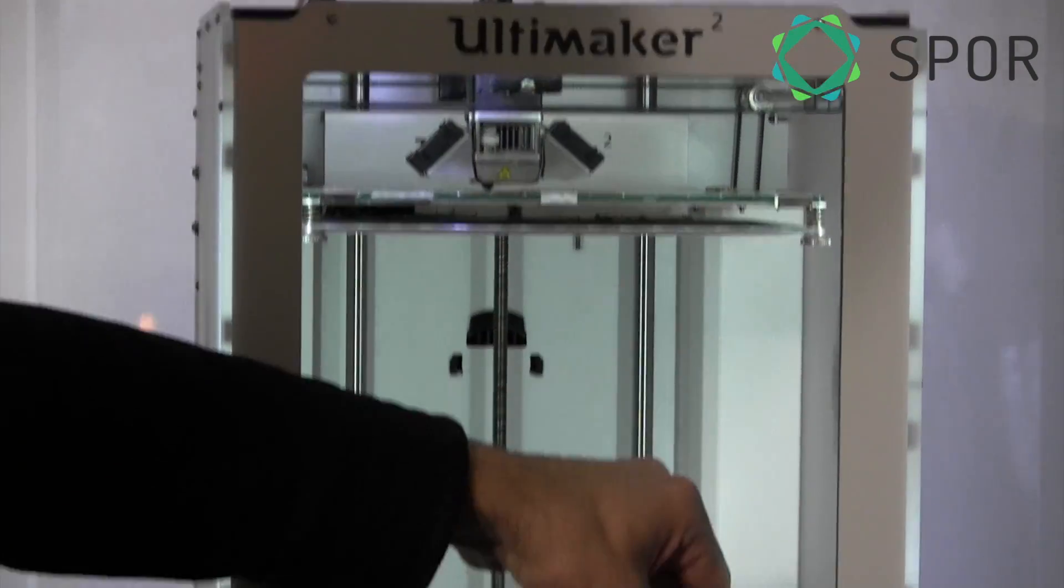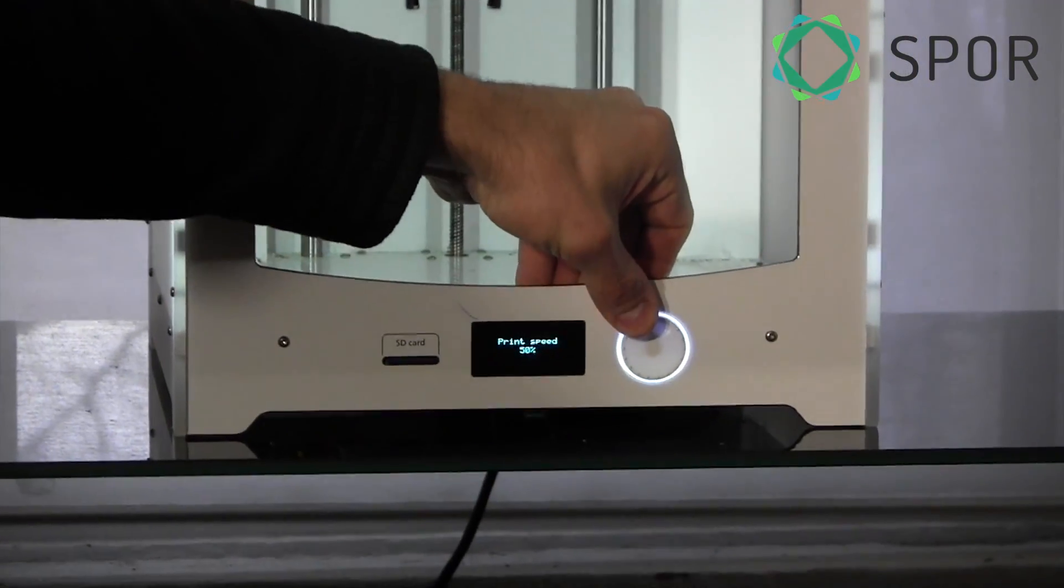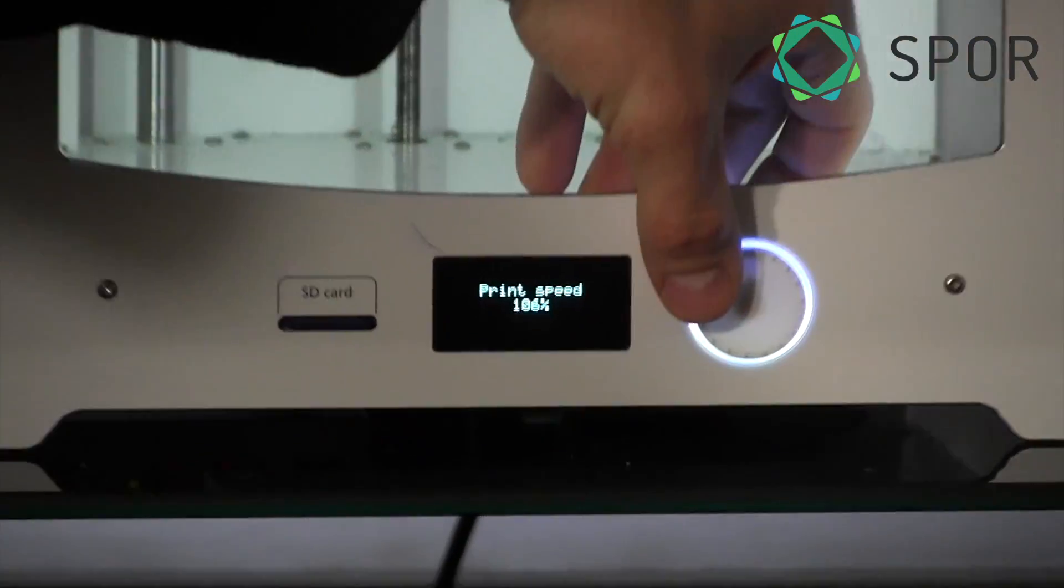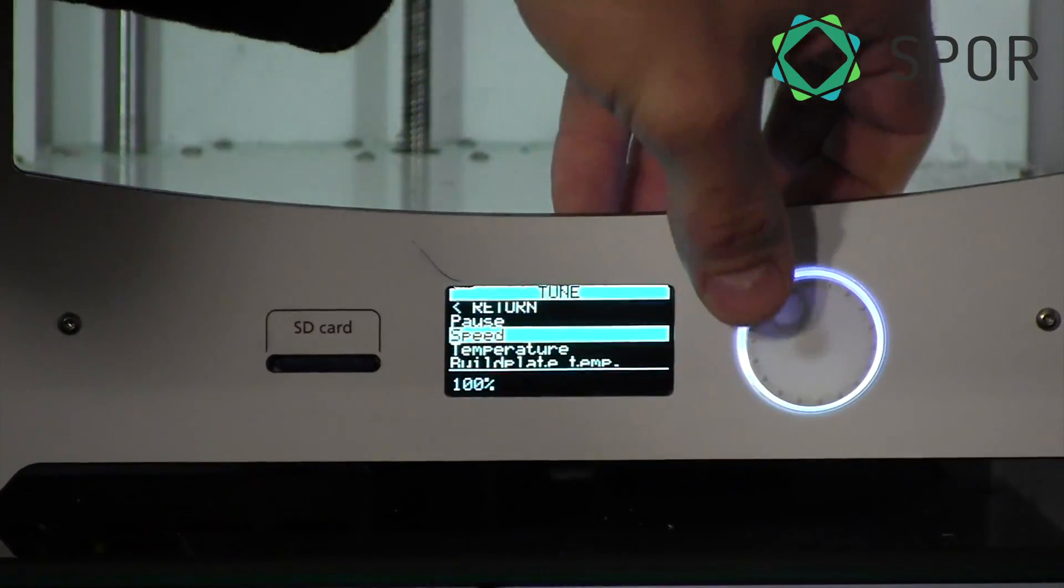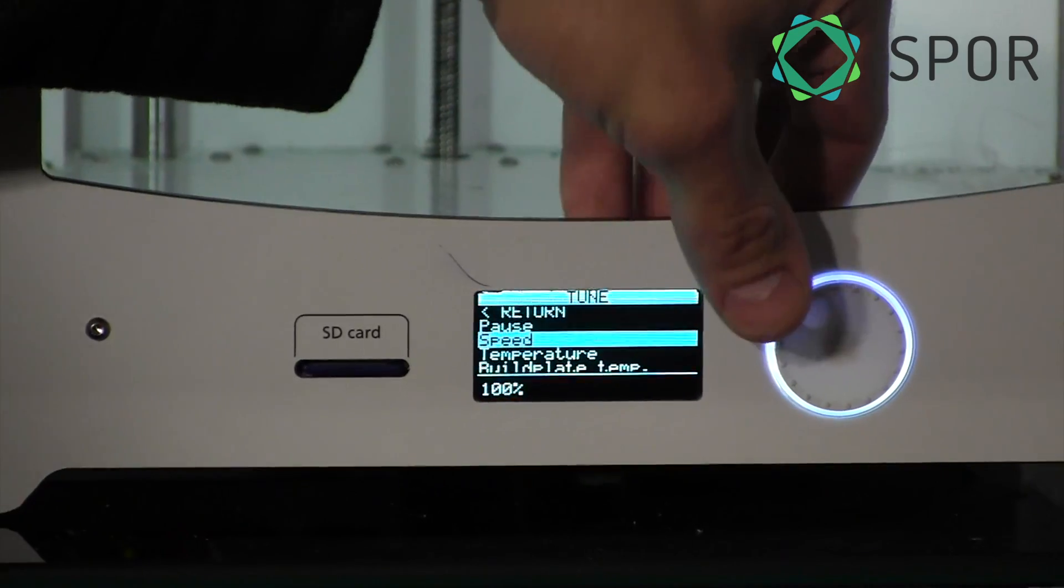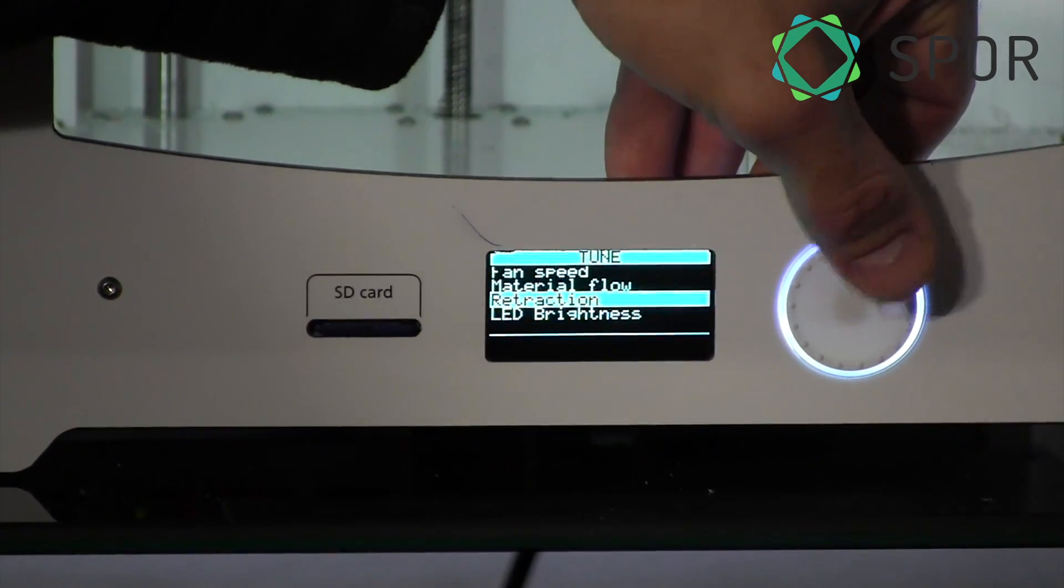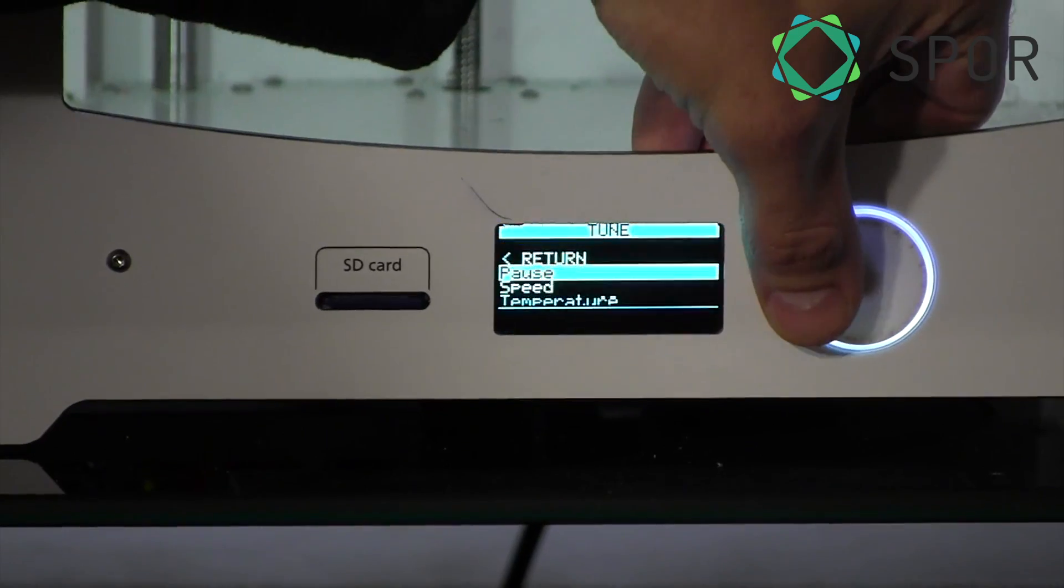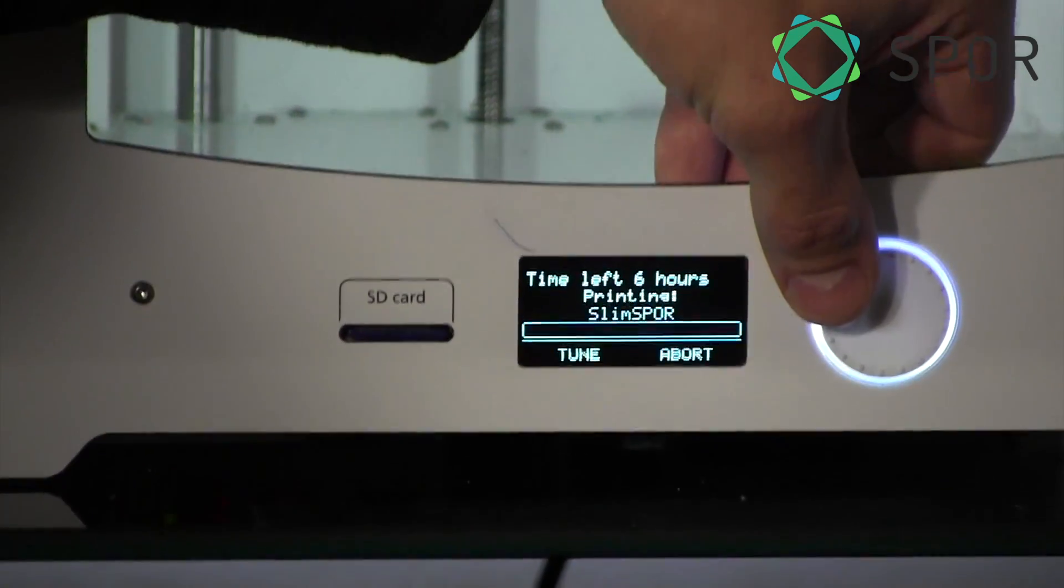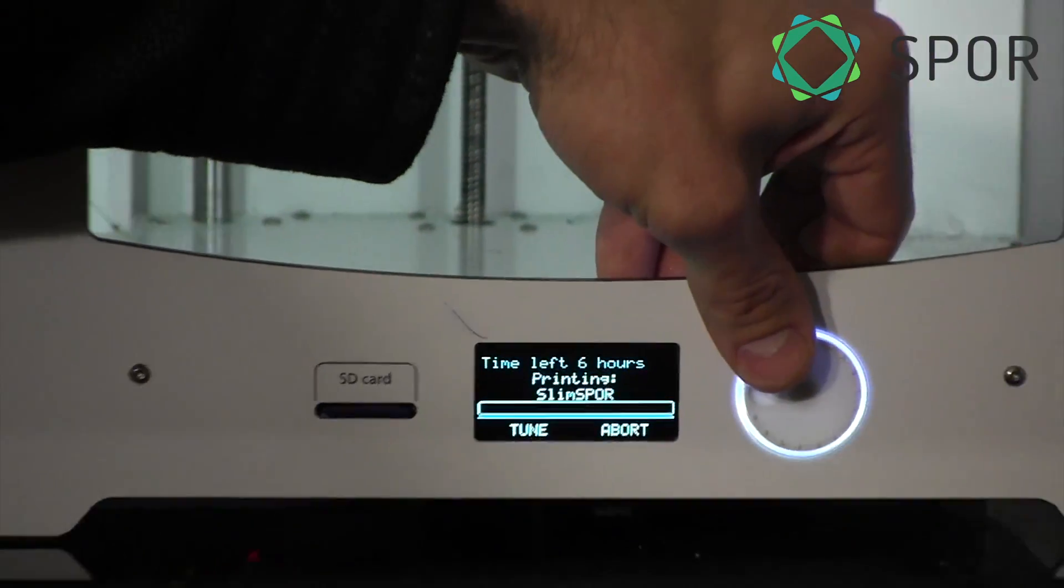Right here for the Ultimaker, you can change settings mid-print. So if I wanted to speed it up—it's running a little slow—I can change the print speed and I can change temperatures. There's more in here, but a lot of it's kind of unnecessary to change mid-print, and I think a lot of printers don't even let you do that.